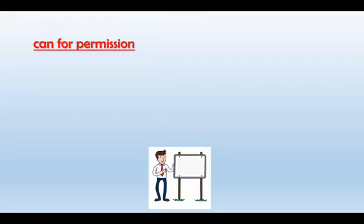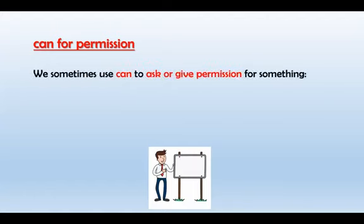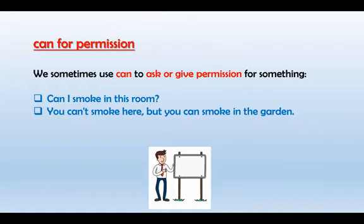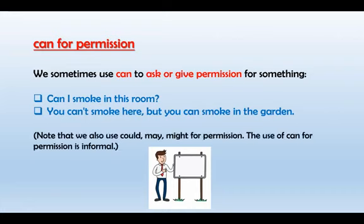El Can para pedir permiso o dar permiso. Como he mencionado, el Can se utiliza para pedir o dar permiso para algo. Por ejemplo: 'Can I smoke in this room?' — ¿Puedo fumar en esta habitación? Respuesta: 'You can't smoke here, but you can smoke in the garden.' Estoy negando la petición al comienzo, pero luego doy el permiso correspondiente para un cierto lugar. Hay que tener en cuenta que también podemos usar Could, May, Might para pedir o dar permiso — el Can se usa de una manera mucho más informal.